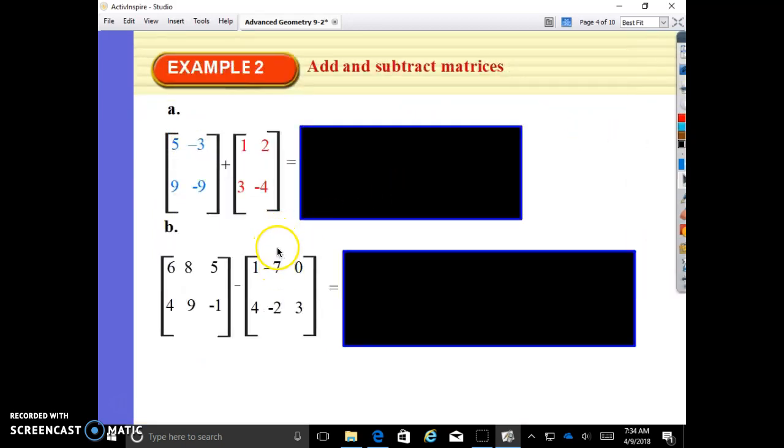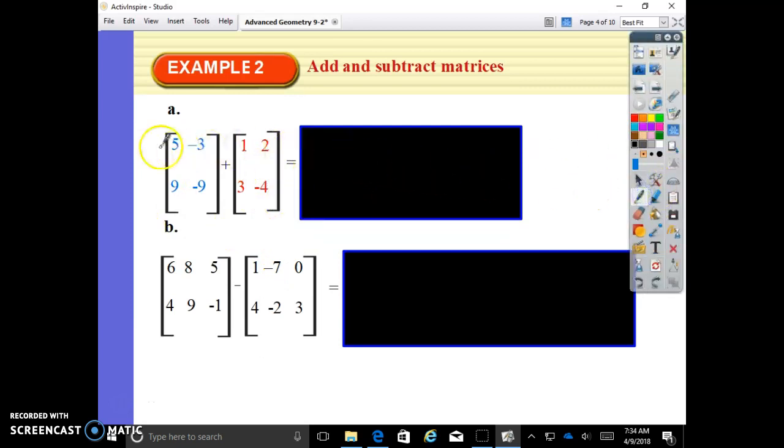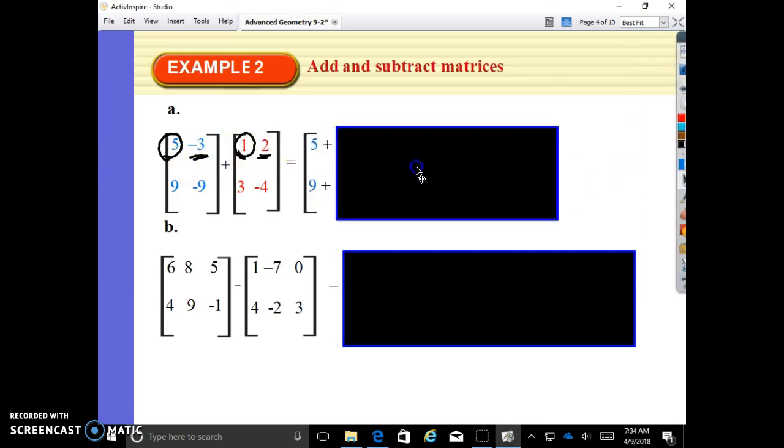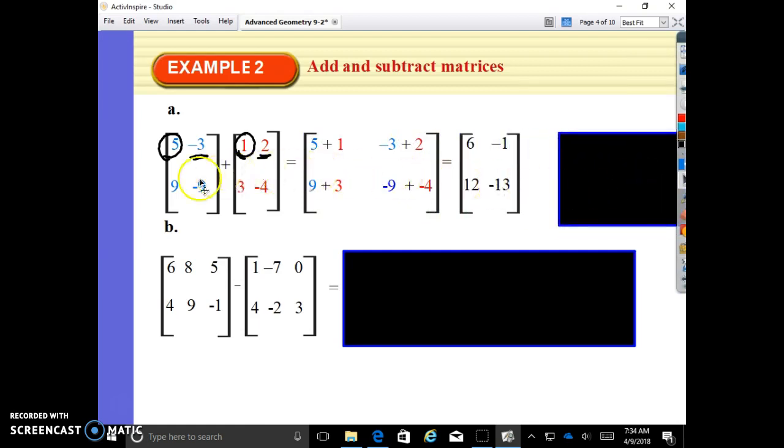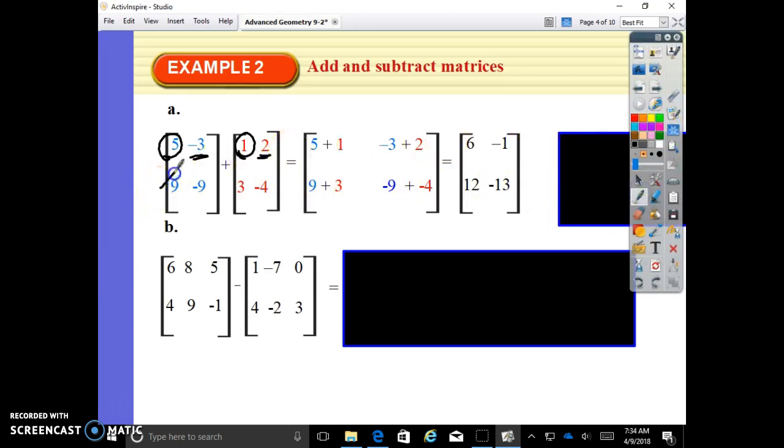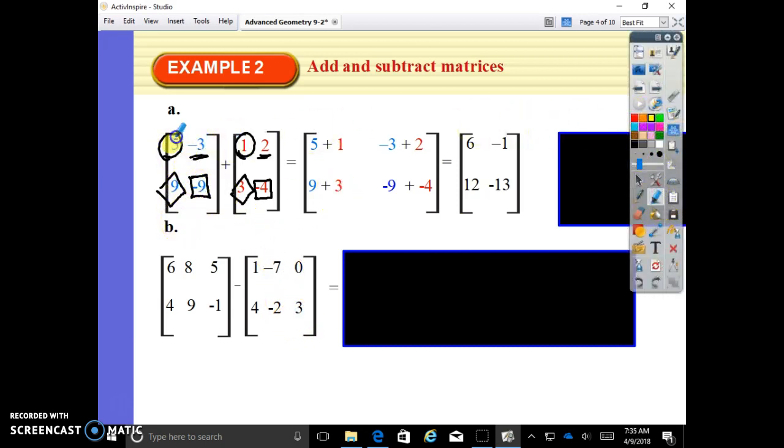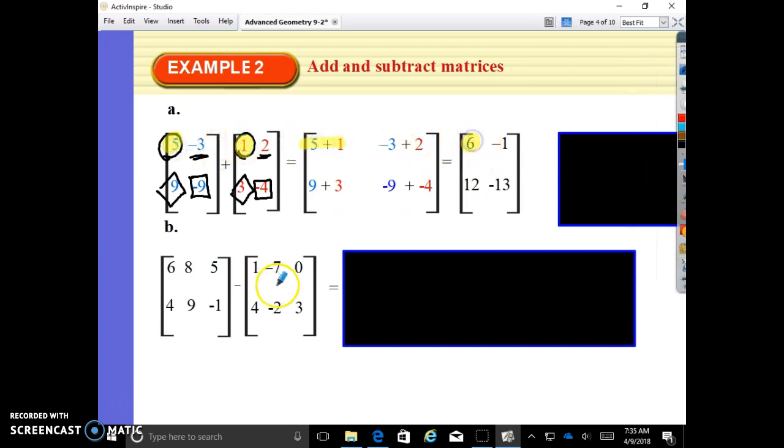We're going to add these matrices. So 5 plus 1 is how many? 6. In our top left corner, we're going to put a 6. Negative 3 plus 2, negative 1. 9 plus 3 is 12. You're literally taking the top left corner with the top left corner, adding them, and they are going to be the answer for the top left corner. You're adding them in the same position. And right here, this is your answer.